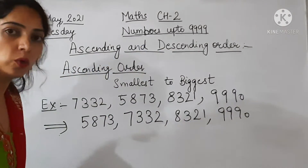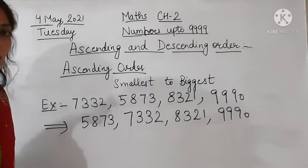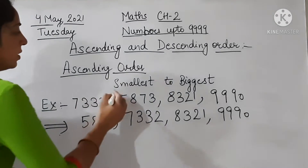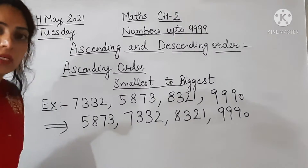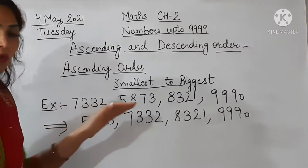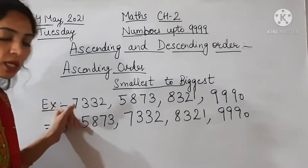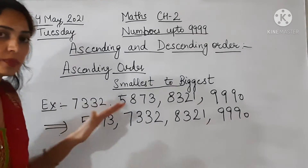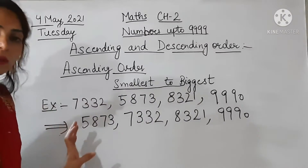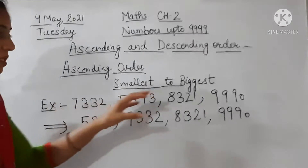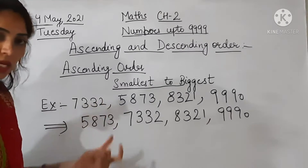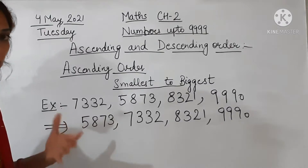Moving to our next topic — ascending and descending order. Ascending order kya hota hai? When we arrange numbers from smallest to biggest. When we start from the smallest number and then move on to the biggest number. Theek hai? So let's take an example — some numbers are given and we have to arrange them in ascending order.